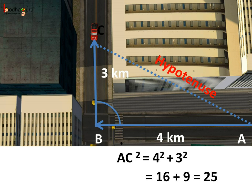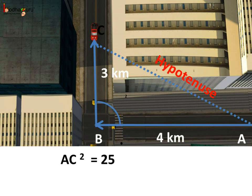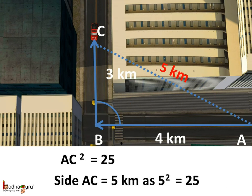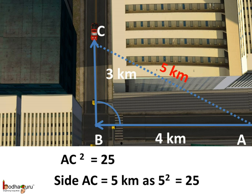Thus AC squared is equal to 16 plus 9, which equals 25. Since 25 is 5 squared, AC is 5. The distance between Aman's starting point A and his current position C is 5 kilometers. We solved this using the Pythagoras theorem, which says in a right angle triangle the square of the hypotenuse is equal to the sum of the squares of the other two sides.